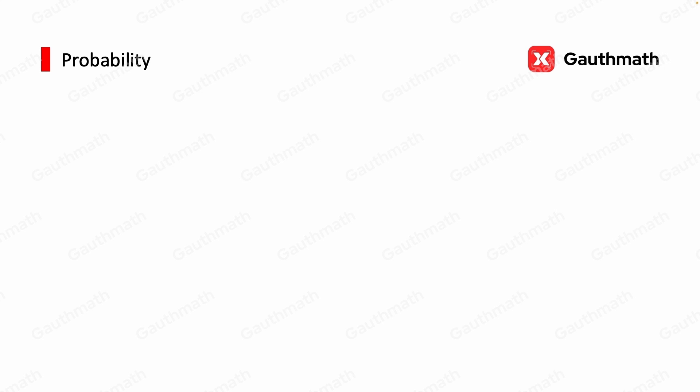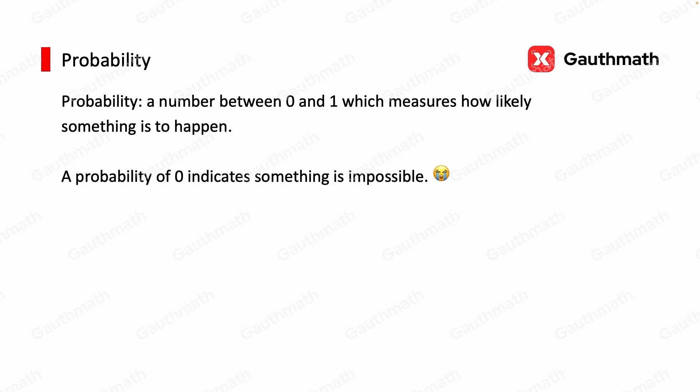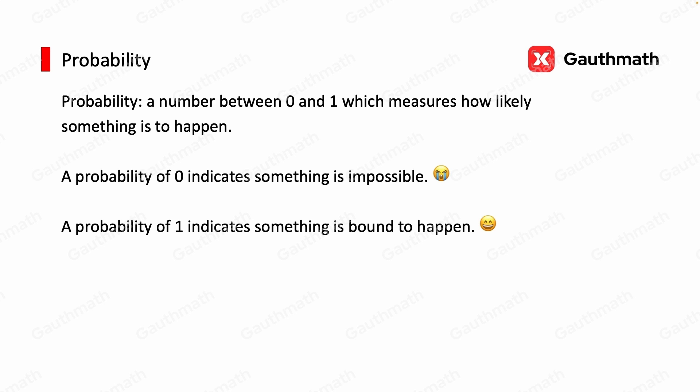Probability is just a number between 0 and 1, which measures how likely something is to happen. If we have a probability of 0, it means something is impossible. A probability of 1 indicates something is bound to happen.